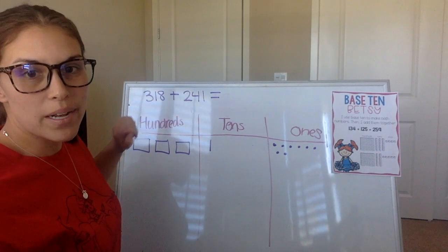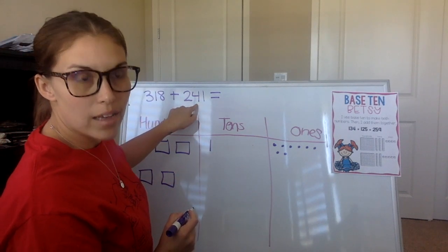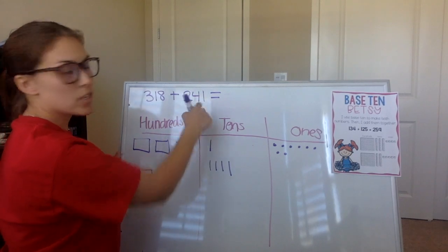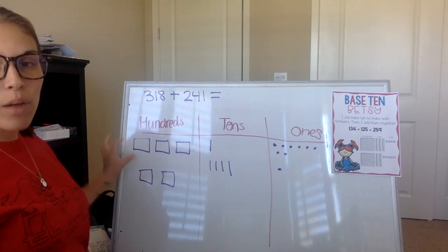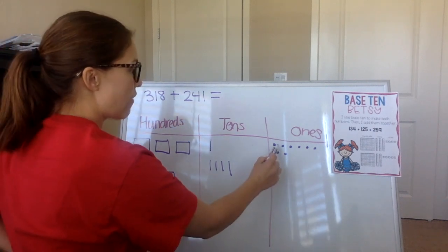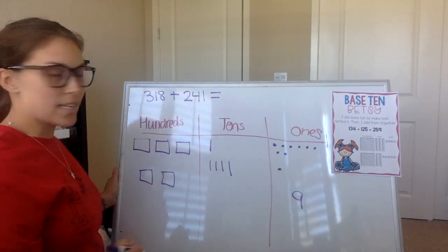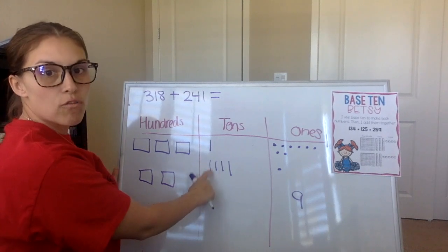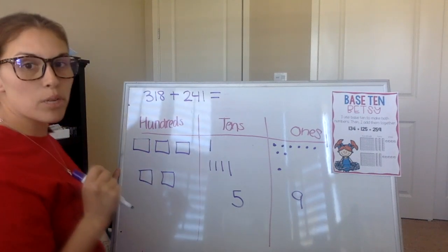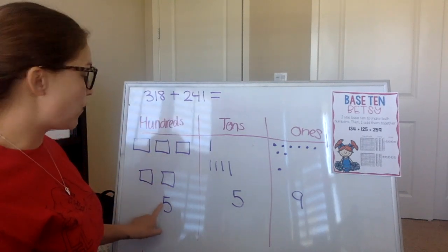Next I'm going to write 241 in my base ten blocks. There are two hundreds. There are how many tens, boys and girls? Excellent — four tens. And how much is four tens? 40. Excellent. So there are four tens and there is one one. Now that I have my problem broken up in base ten blocks, I can add each column to get the answer. We're always going to start in the ones column. So I have eight ones plus one — eight plus one is nine. I have four tens plus one ten, so four plus one is five. And I have two hundreds plus three hundreds — five hundreds. So our answer: 318 plus 241 is 559.